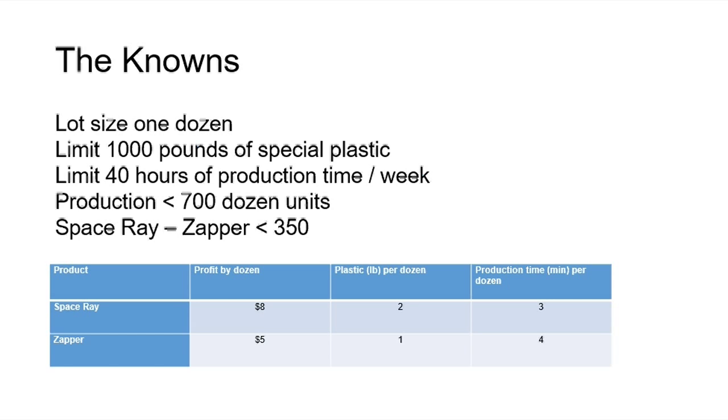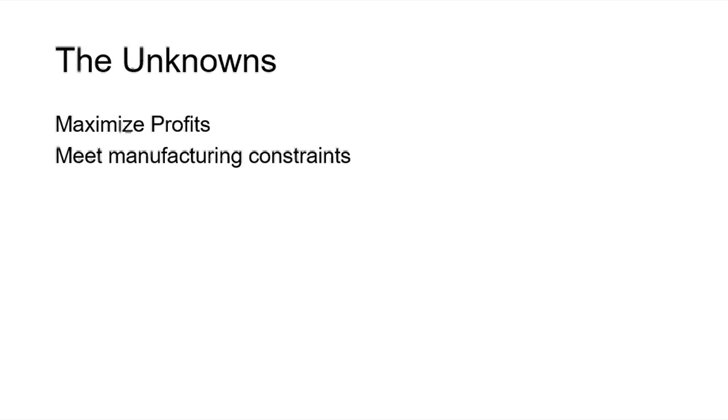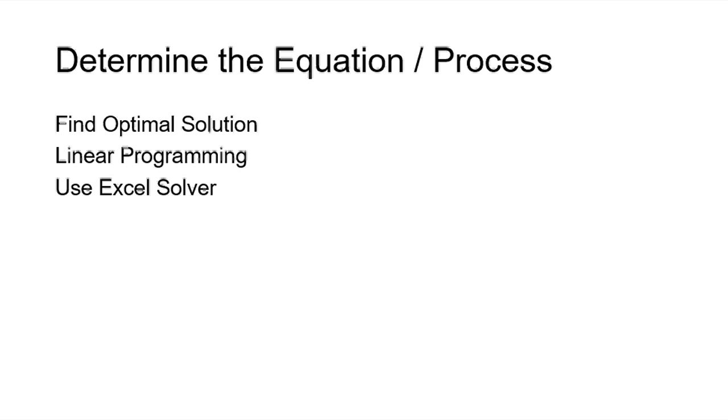On to step 3, we identify the unknowns. Although it's not clearly stated in the problem, we can infer that Galaxy Industries wants to maximize profits while meeting the manufacturing constraints they already approved. As we determine the equation of the process, since it's a maximize problem, that tells us we need to design a linear programming model maximizing the total weekly profit. And we're going to use Excel Solver as a software to help us do this.